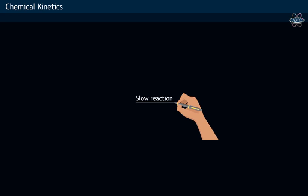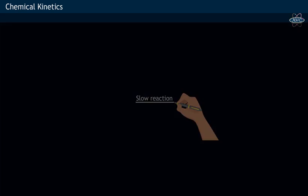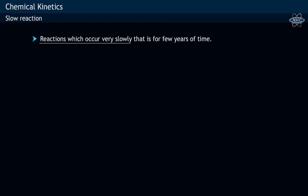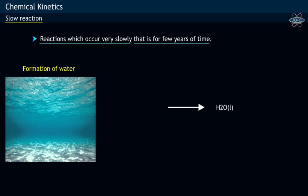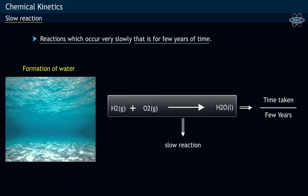Slow reactions: the reactions which occur very slowly, that is over a few years of time, are considered as slow reactions. For example, the formation of water from hydrogen and oxygen gas takes a few years, hence it is a slow reaction.